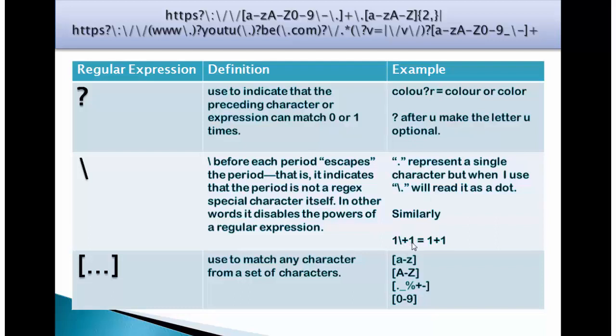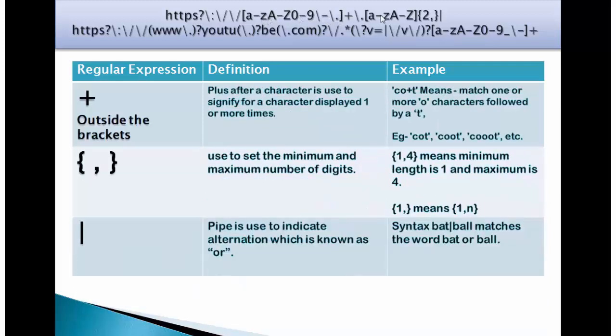1 backslash plus 1 is equal to 1 plus 1. My website domain can have any digits or characters a to z or 0 to 9 with a hyphen in between or a dot in between and then these square brackets close. Let's now talk about this plus sign in between these two square brackets. The definition of this sign is plus after a character is used to signify for a character displayed one or more times. For example CO plus T means it matches one or more O characters followed by a T. For example COOT or COOOT.